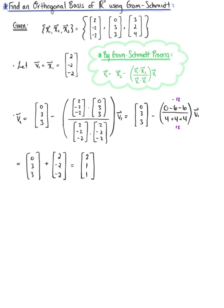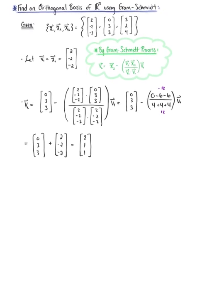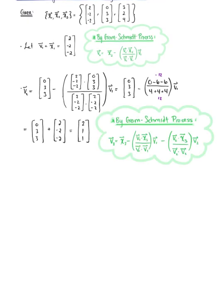By the Gram-Schmidt process, vector v₃ is going to be equal to vector x₃ minus the projection of vector x₃ onto vector v₁, minus the projection of vector x₃ onto vector v₂. So vector v₃ equals vector x₃, which is (3, 2, 4), minus the projection of x₃ onto v₁. We have vector v₁, which is (2, -2, -2), dotted with vector x₃, all divided by vector v₁ dotted with itself.